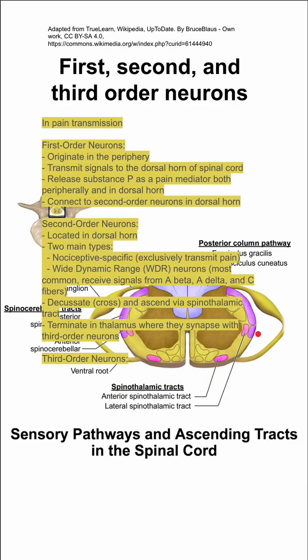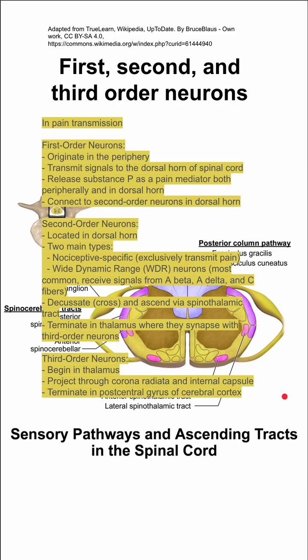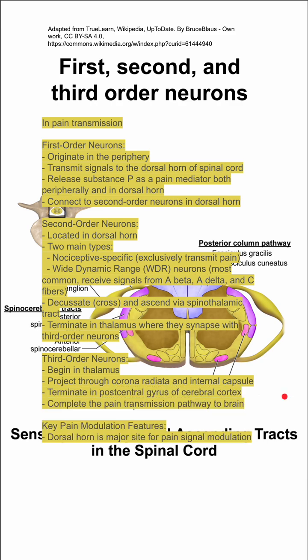The second order neurons terminate in the thalamus where they synapse with the third order neurons, which, of course, begin in the thalamus. They project through the corona radiata and internal capsule and they terminate in the post-central gyrus of the cerebral cortex, completing the pain transmission pathway to the brain.